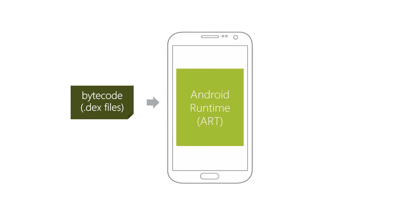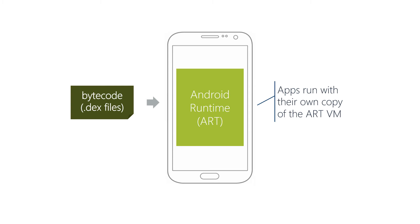Those DEX files are then run by the Android Java runtime engine known as the Android Runtime, or ART. ART translates the bytecode into native code when the app is installed. Each app runs in its own process and gets its own copy of ART, and this keeps apps isolated from each other and improves security.